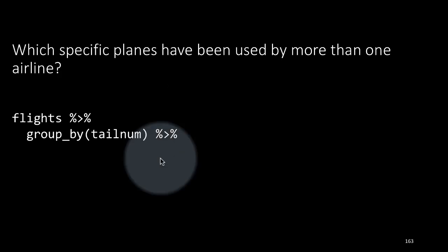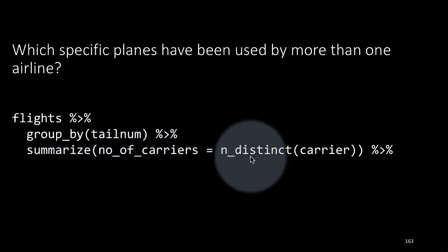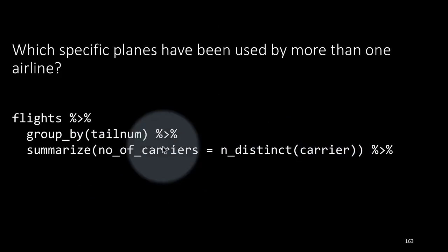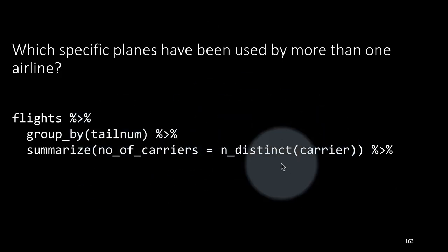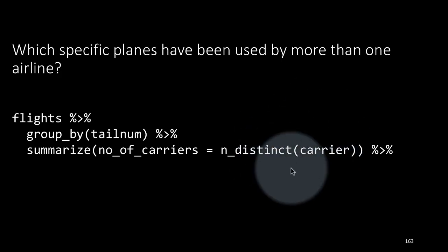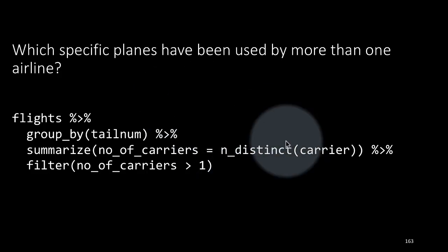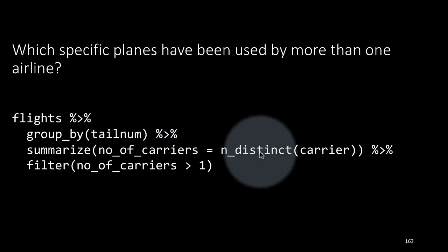Which specific planes have been used by more than one airline? We say flights group_by tailnum, then summarize number_of_carriers equals n_distinct(carrier). That is, for every tailnum we find how many distinct carriers it is associated with. Then we filter where number_of_carriers is greater than one — show all tailnums used by more than one carrier. You will get a list of all the planes used by more than one carrier.